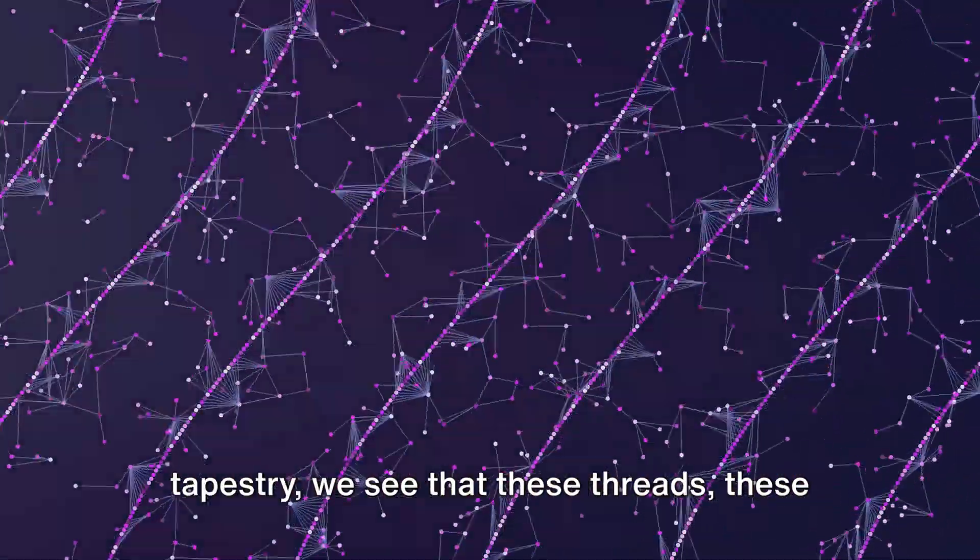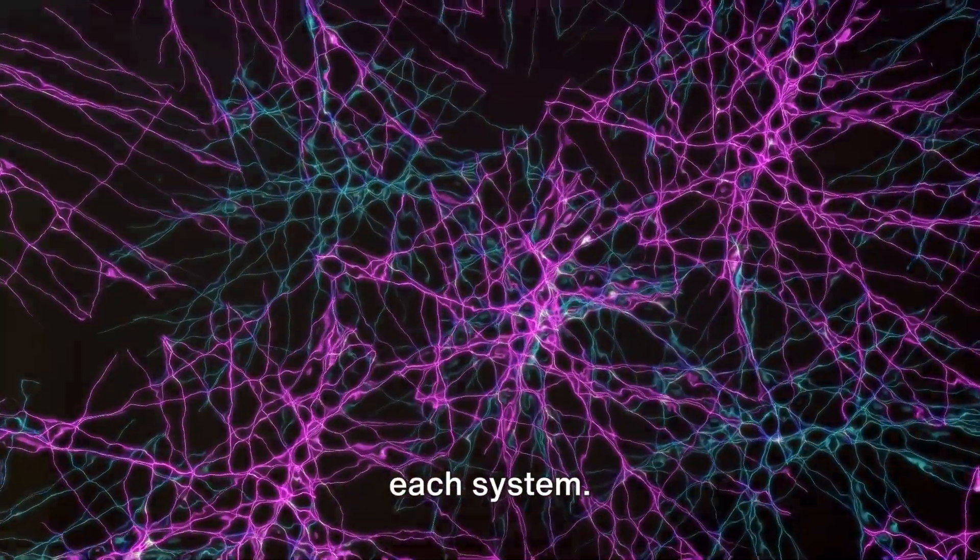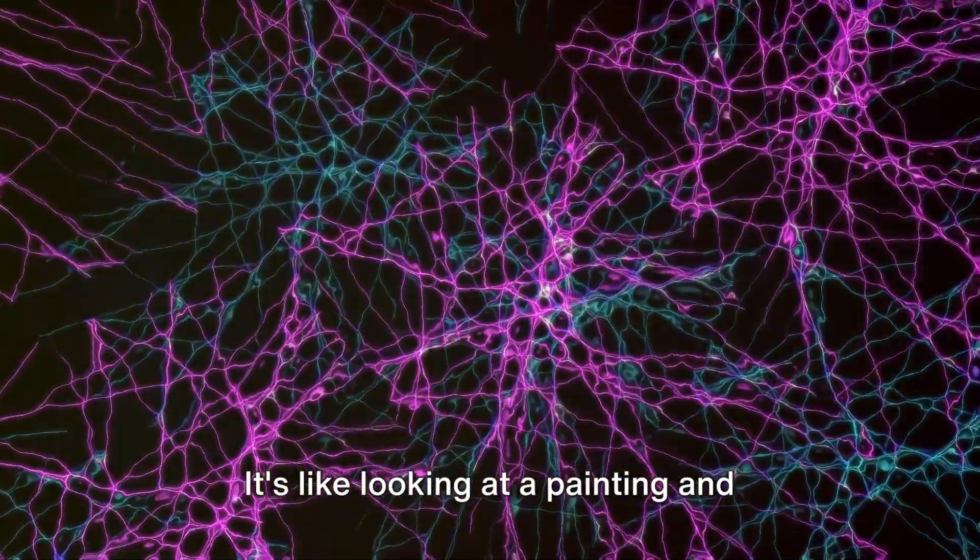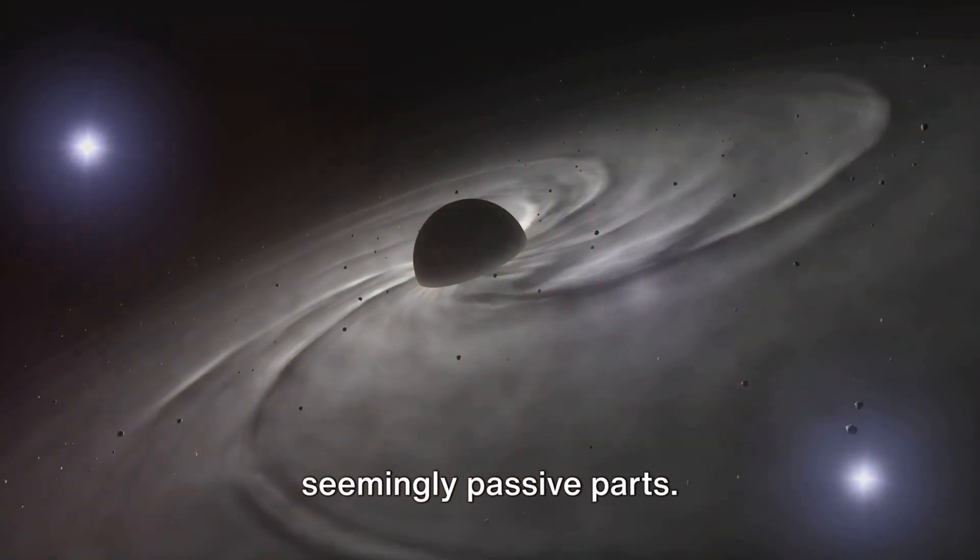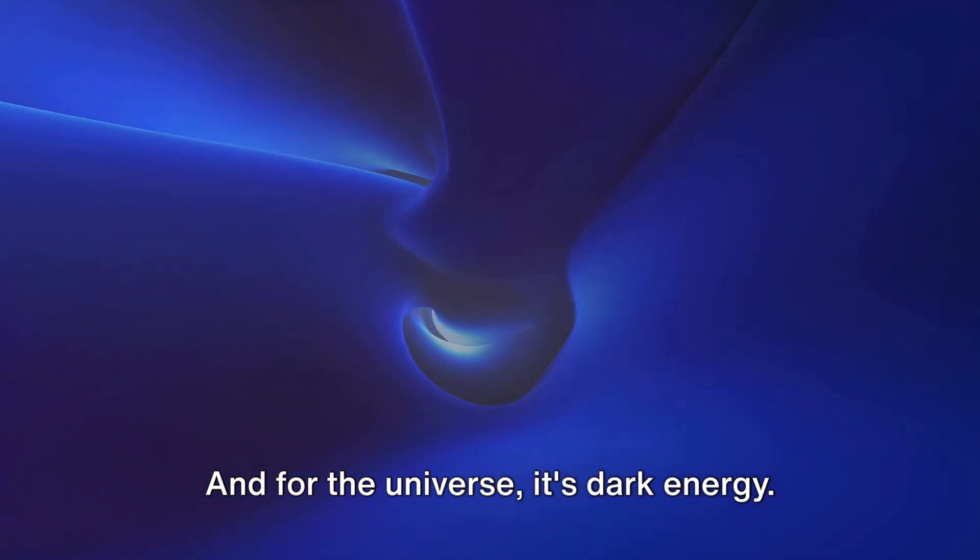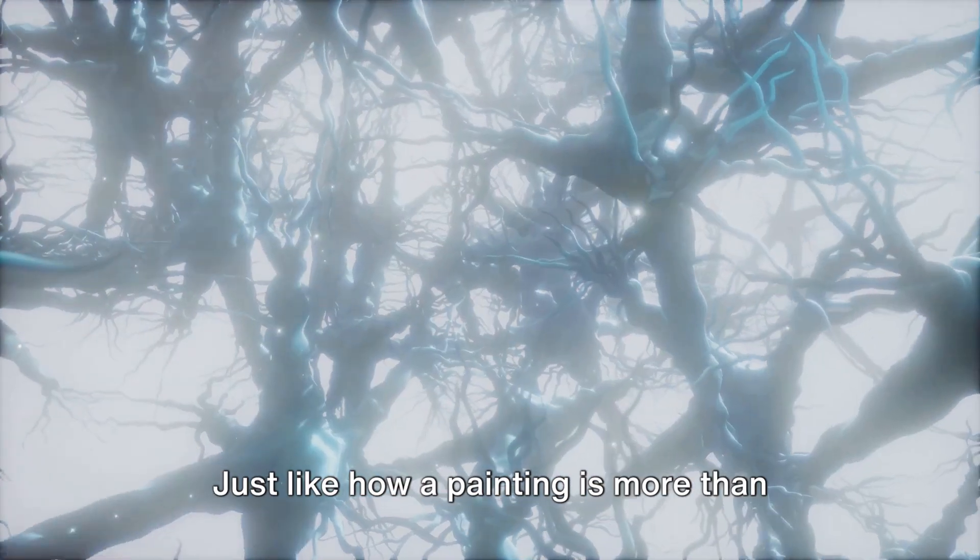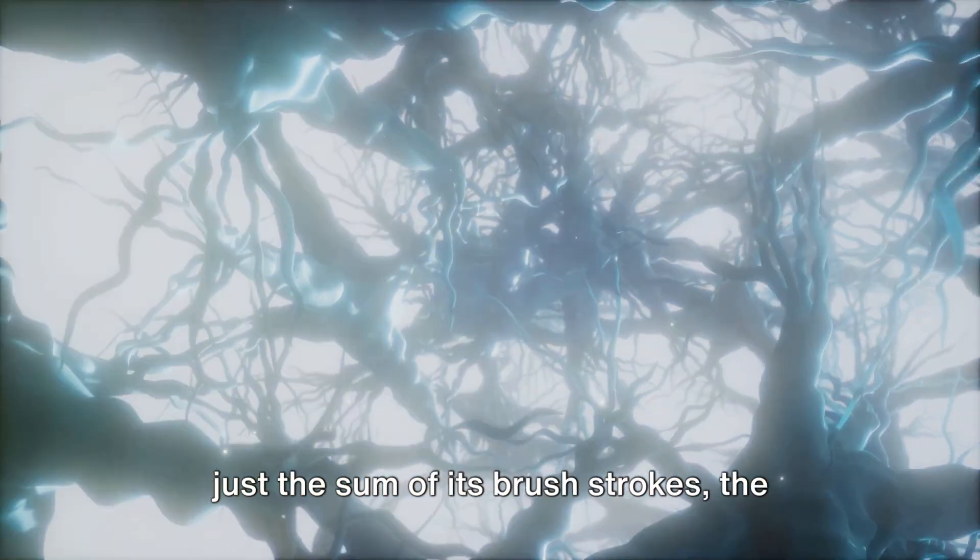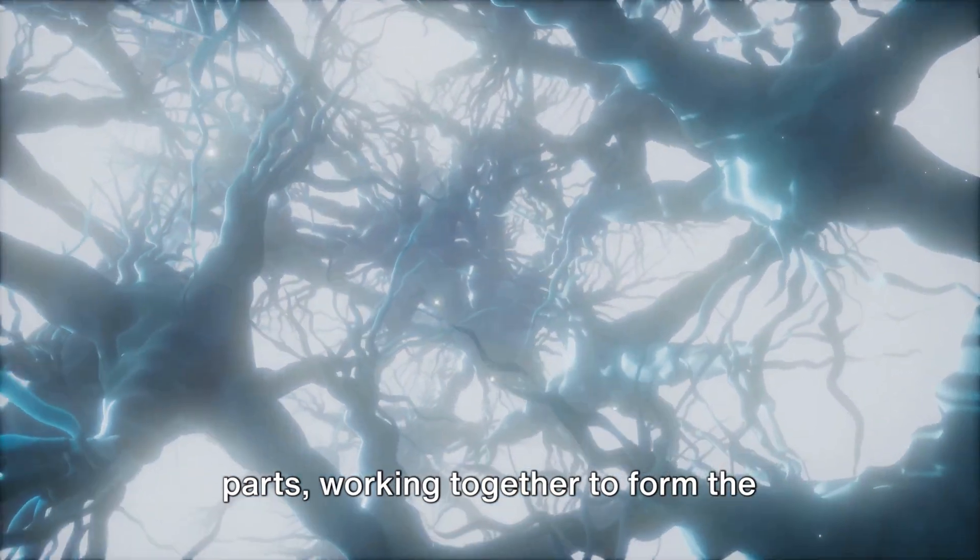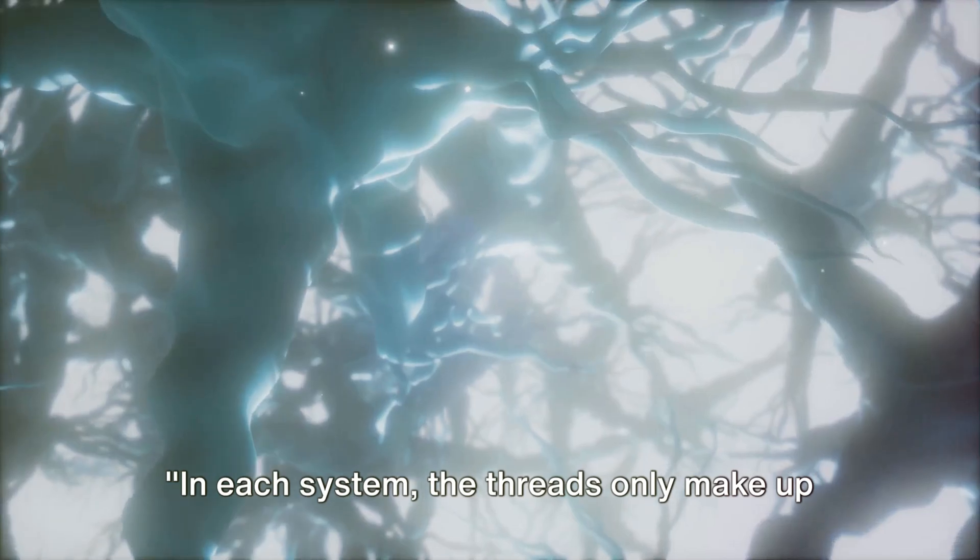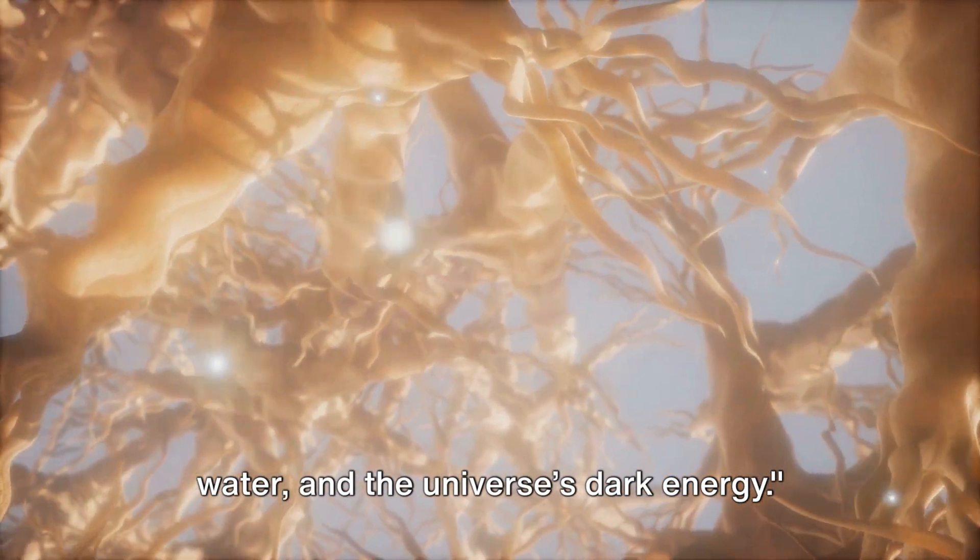As we delve deeper into this cosmic tapestry, we see that these networks of neurons or galaxies only make up about 30% of the mass in each system. It's like looking at a painting and realizing that the brush strokes you see are only a part of the whole picture. The remaining 70% is made up of seemingly passive parts. For the brain, it's water. And for the universe, it's dark energy. These are like the canvas on which the painting is made, often overlooked, but without which the painting wouldn't exist.